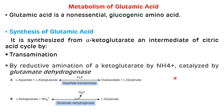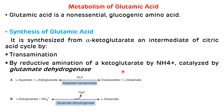That is the first mechanism by which we can synthesize glutamic acid. The second one is by the reductive amination of alpha-ketoglutarate by ammonia, and this reaction is catalyzed by glutamate dehydrogenase. There is a combination of alpha-ketoglutarate and ammonia in the presence of glutamate dehydrogenase enzyme, and this alpha-ketoglutarate is converted to glutamate. Both these reactions are reversible reactions.